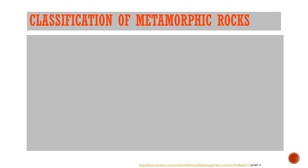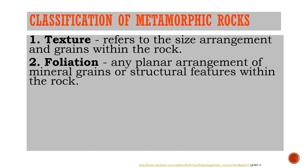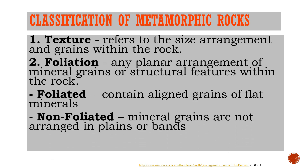The classification of metamorphic rocks is based on texture — referring to the size, arrangement, and grains within the rock — and foliation, which refers to any planar arrangement of mineral grains or structural features within the rock. Foliated metamorphic rocks contain aligned grains of flat minerals, while non-foliated metamorphic rocks have mineral grains that are not arranged in planes or bands.